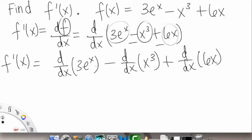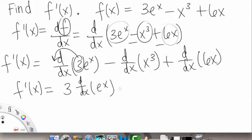Okay, so here I just broke it up. I kind of distributed the d dx. So now what we can do, so our f prime of x is equal to, I'm going to bring the coefficients out in front, so the 3 can come out in front here. So we have a 3 times d dx of e to the x minus,